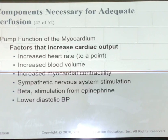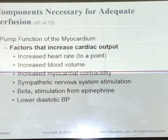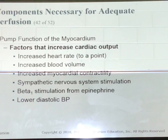Factors that increase cardiac output: increased heart rate, increased blood volume, increased myocardial contractility, sympathetic nerve stimulation, beta-1 stimulation from epinephrine, and a low blood pressure. When your blood pressure drops, your heart rate is going to pick up to compensate for it.